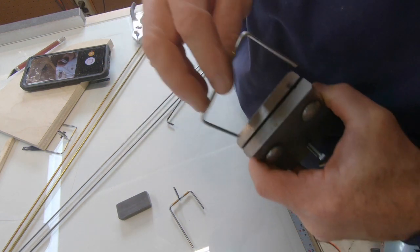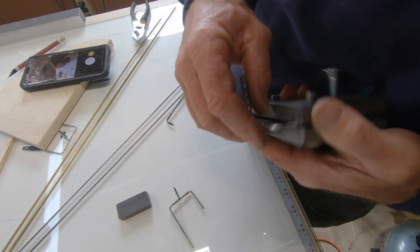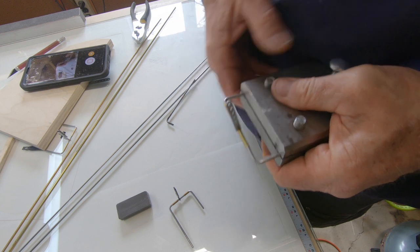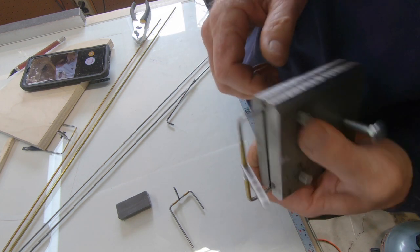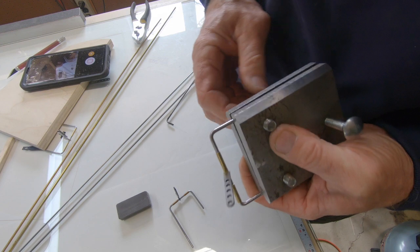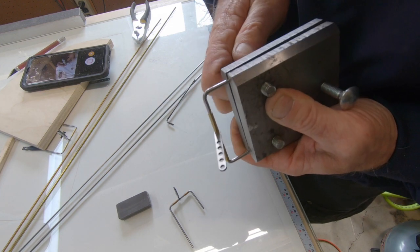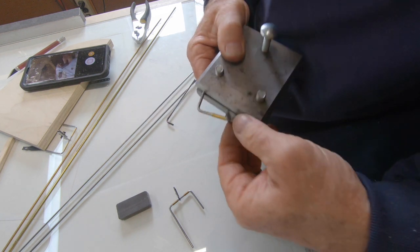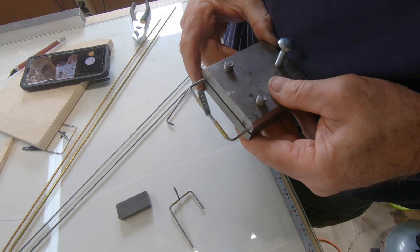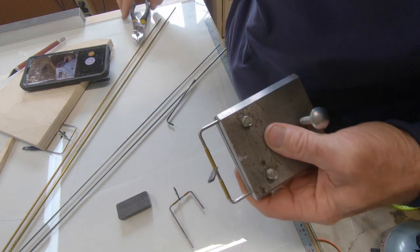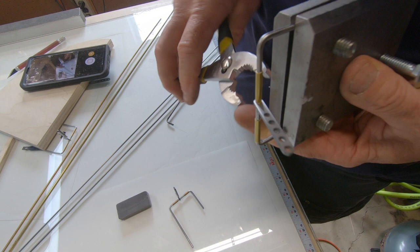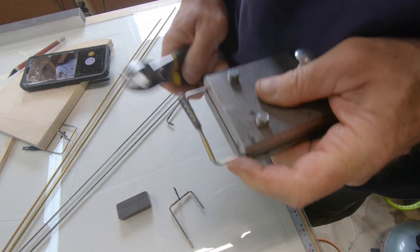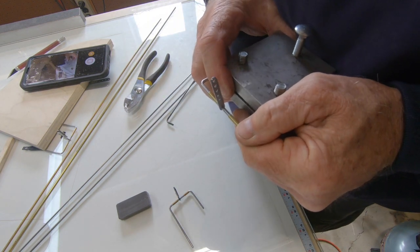So the idea behind this thing is that you clamp the horn in here and you just squeeze it between these plates and then you tighten these bolts here, which really could be wing nuts or something a little bit more favorable to tighten.